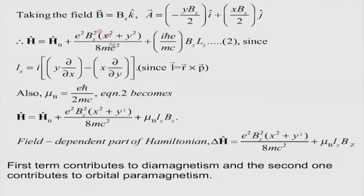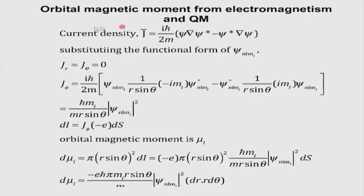We have to identify these two terms separately and proceed. The first term is the usual paramagnetic contribution and the second is the diamagnetic contribution. I will take you to the quantum mechanical aspects before proceeding further. In quantum mechanics, just as we talked about the probability density, I can also have a probability current density. If I take a hydrogen atom in a three-dimensional spherical polar system, the probability current density is related to the wave function through a specific expression.